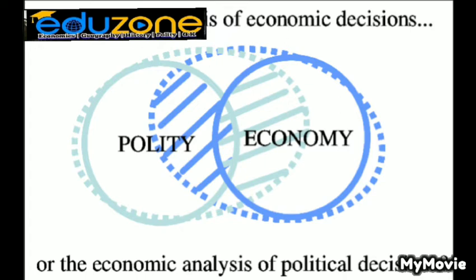With the publication in 1947 of Foundations of Economic Analysis by Paul Samuelson, who brought complex mathematical tools to the study of economics, the bifurcation of political economy and economics was complete. Mainstream political economy had evolved into economic science, leaving its broader concerns far behind.